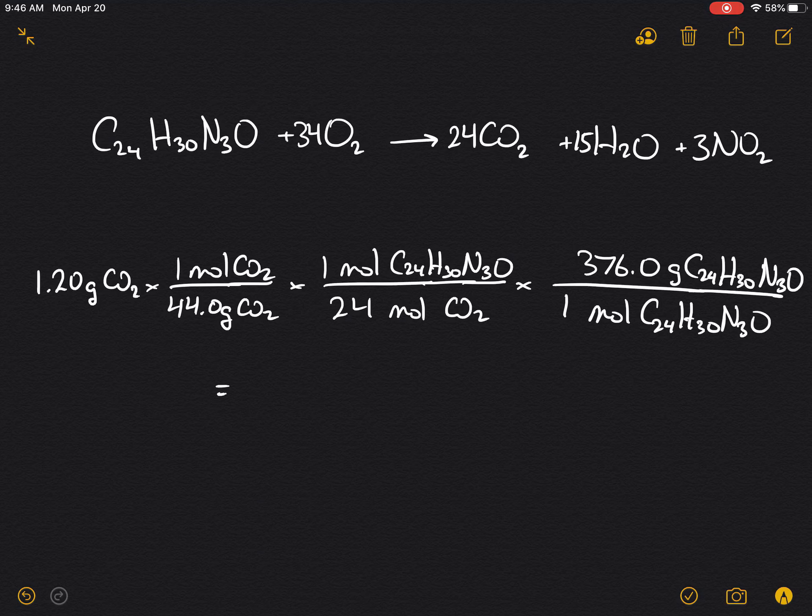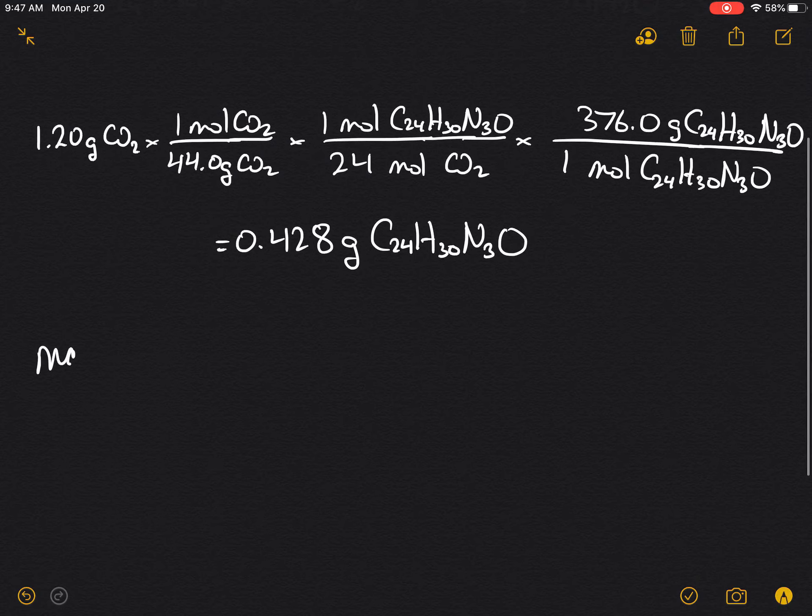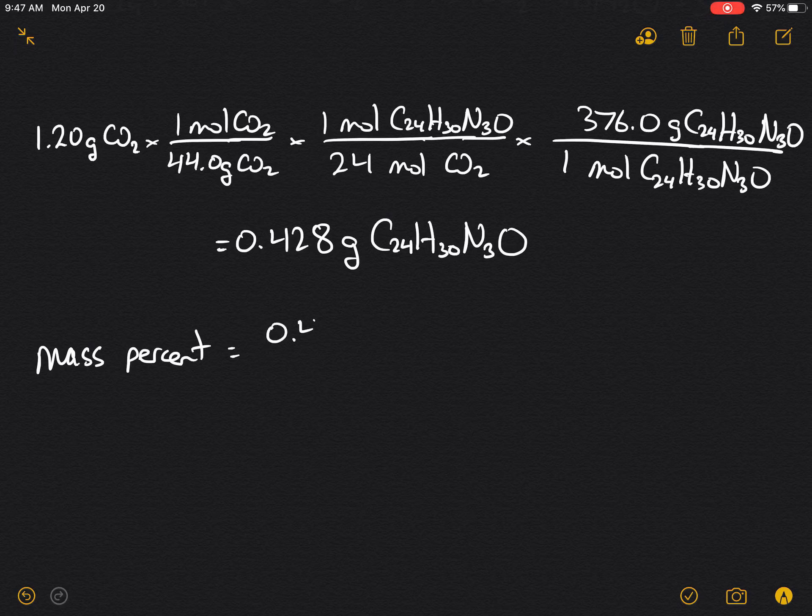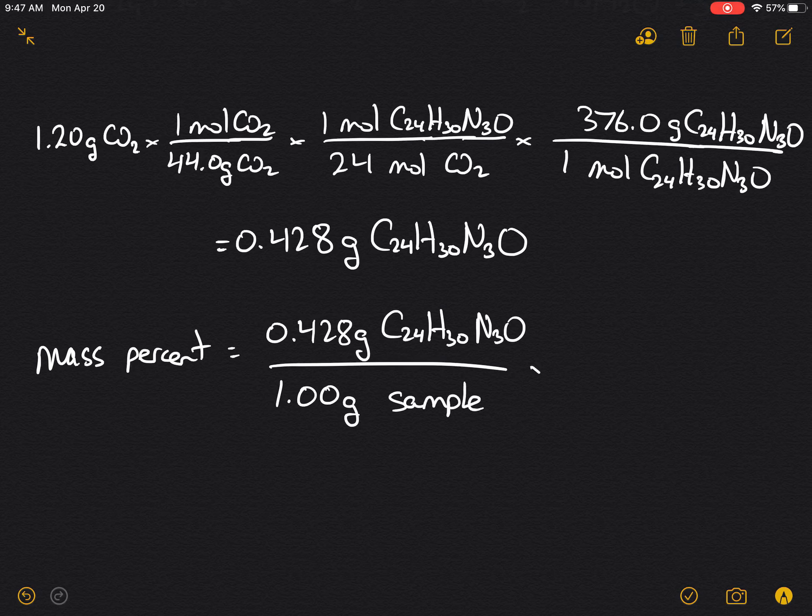And this would yield 0.428 grams. And therefore, our mass percent would be equal to the 0.428 grams of the C24H30N3O, divided by the mass of the sample, which we're told is 1.00 grams, times 100%, would yield the mass percent of the LSD, which is equal to 42.8%.